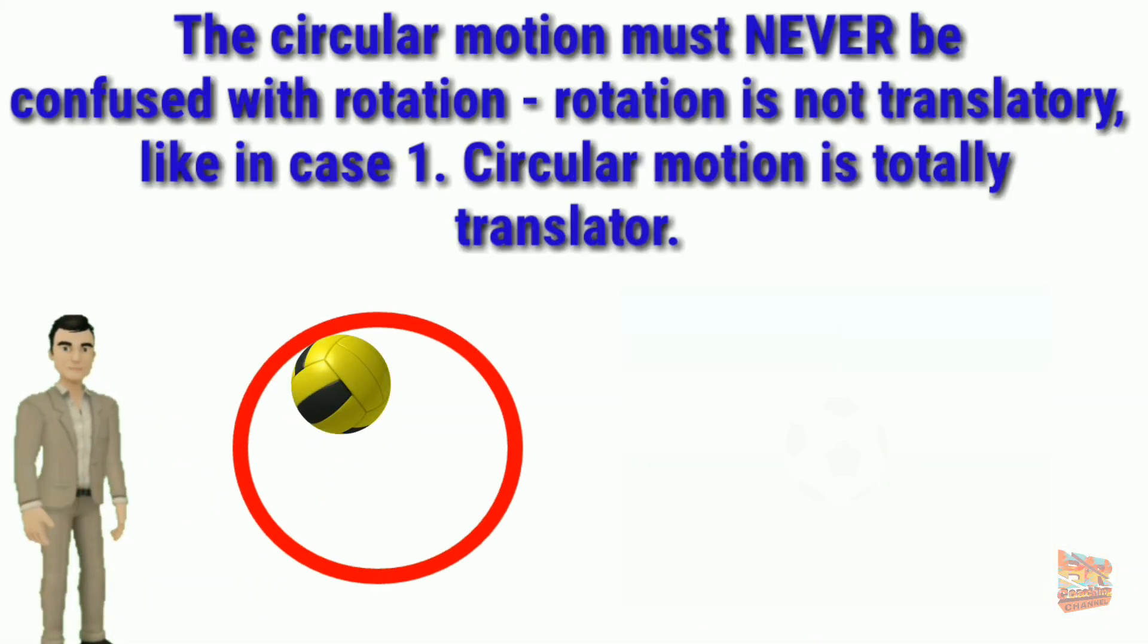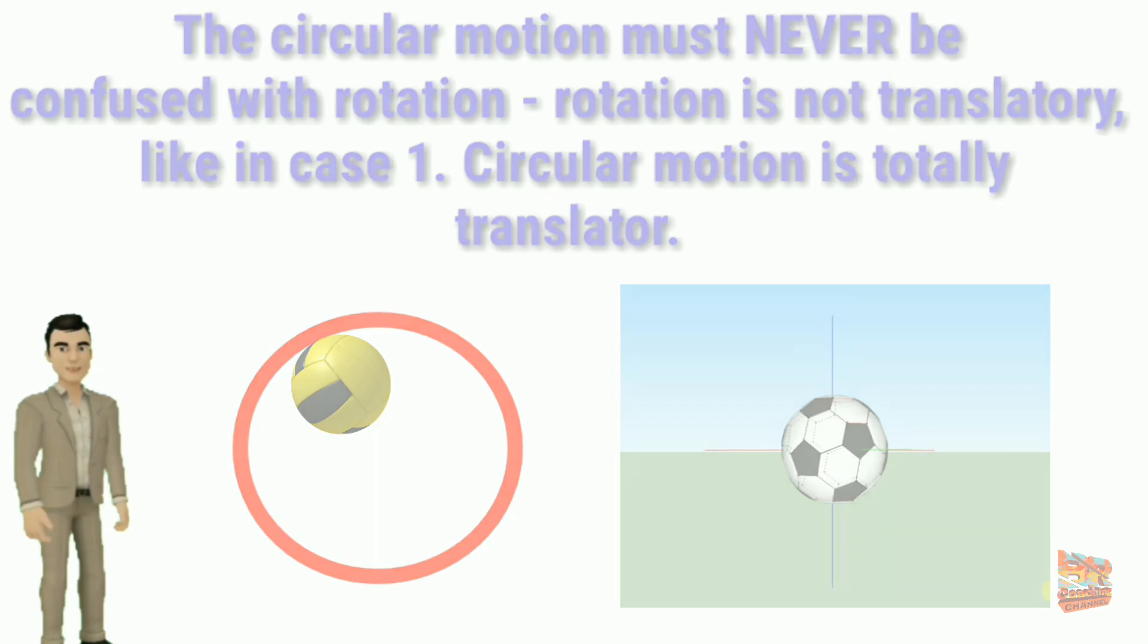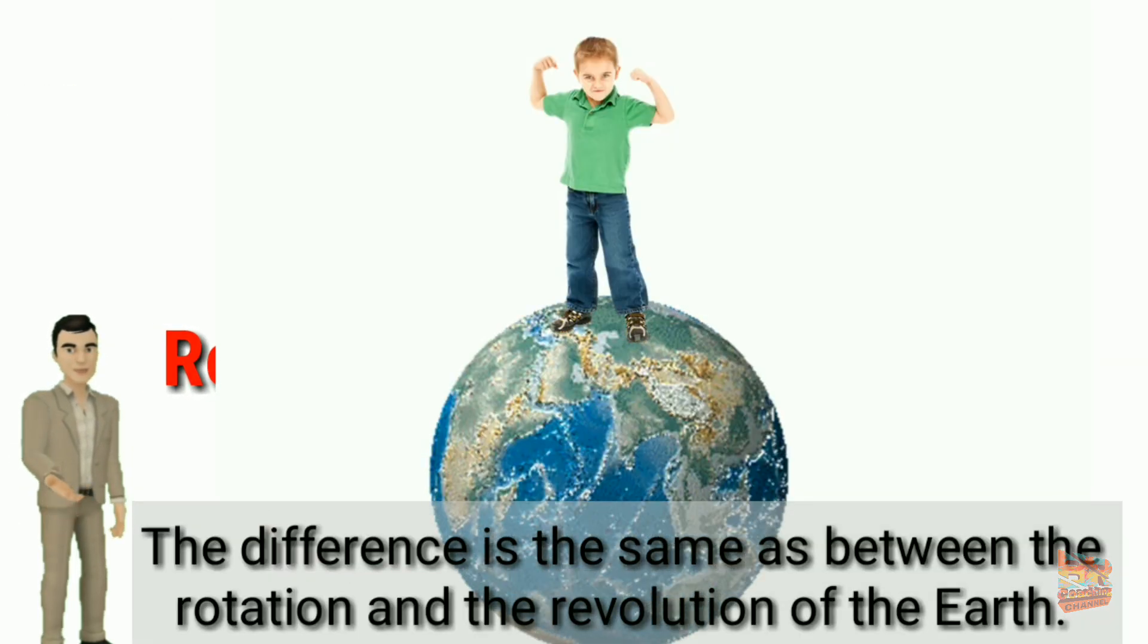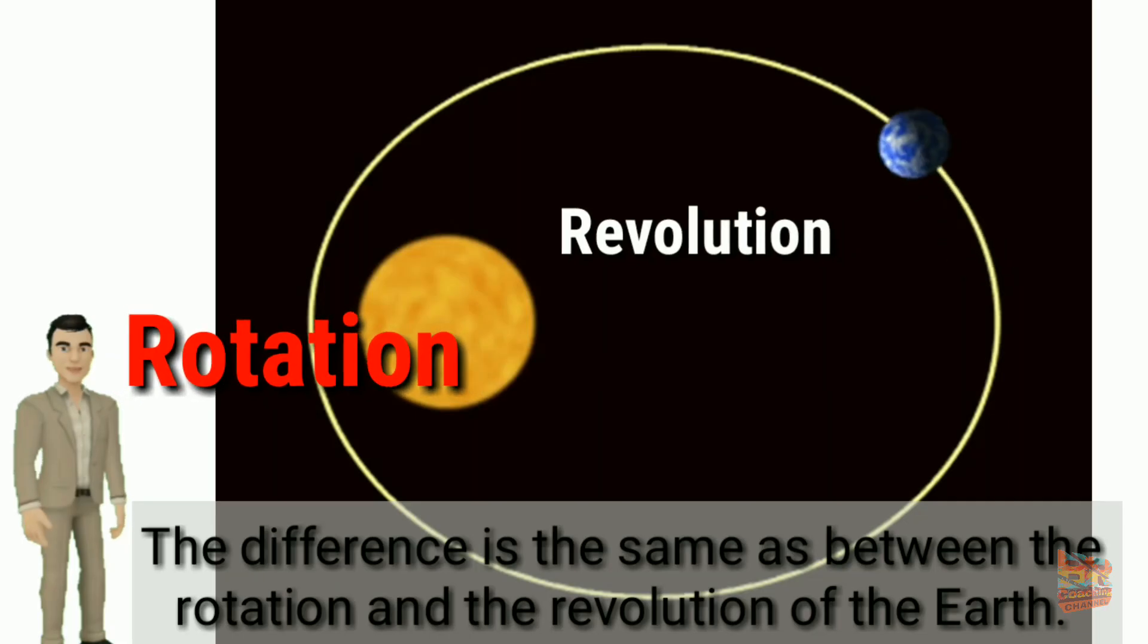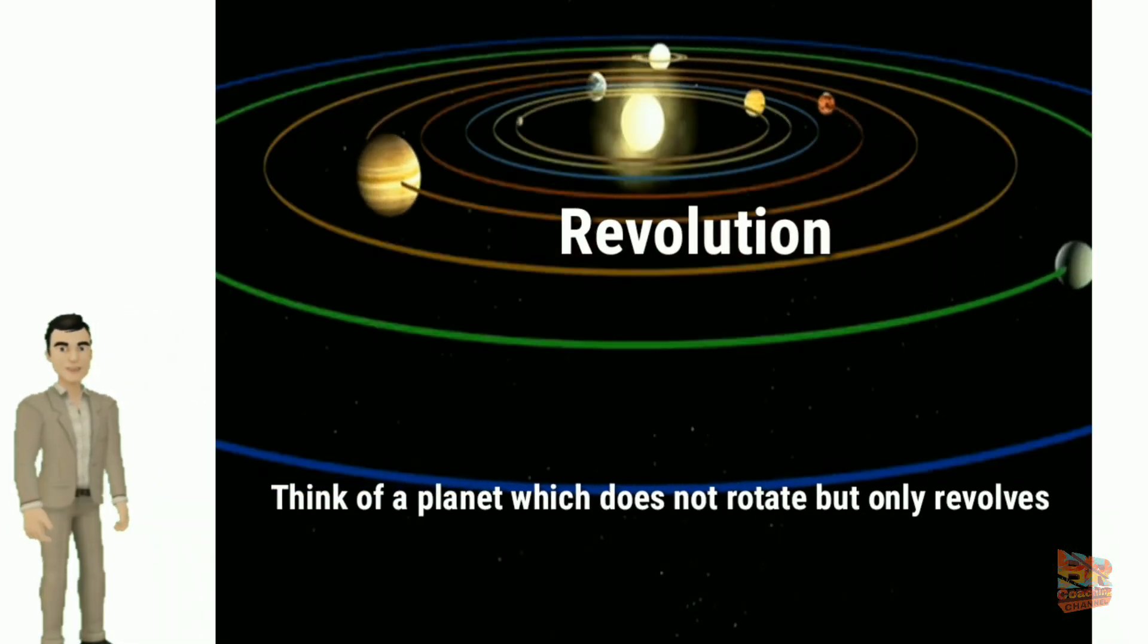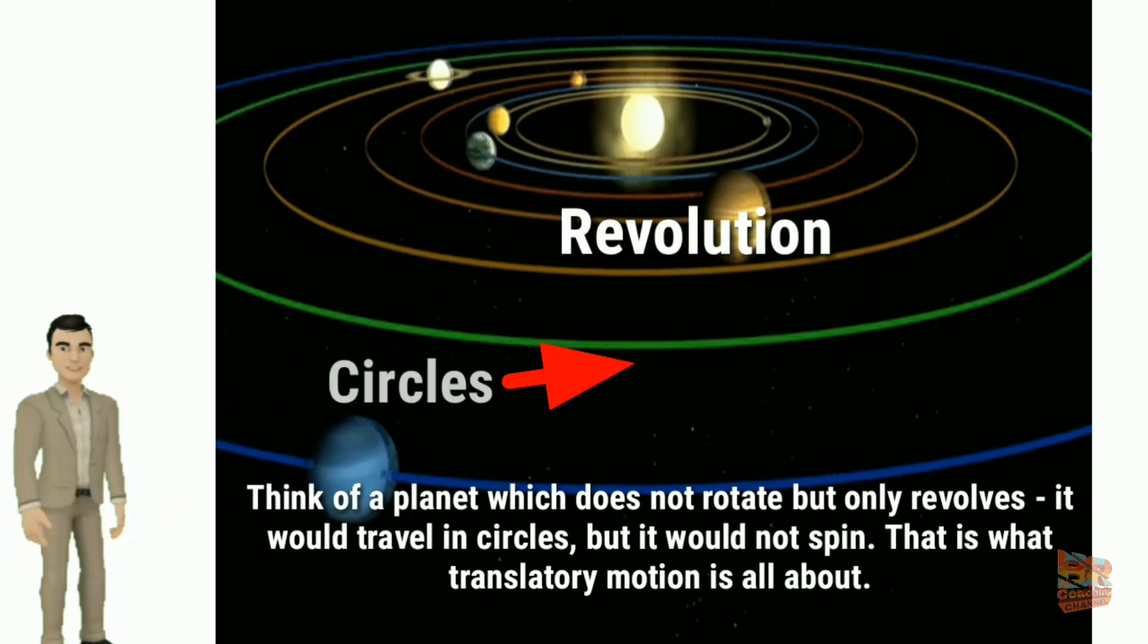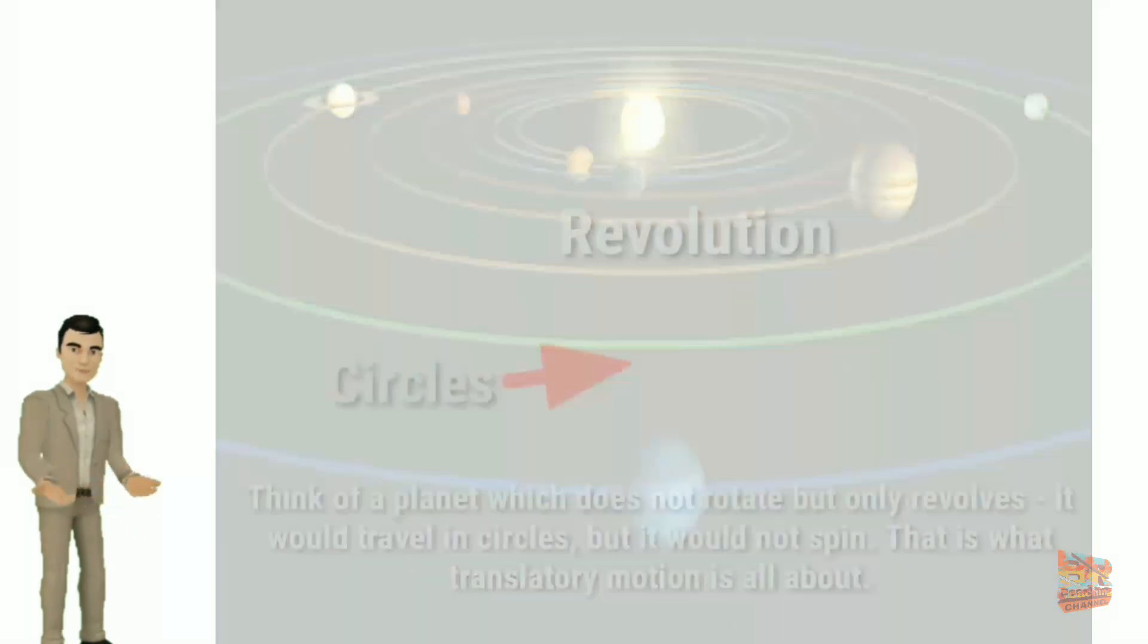The circular motion must never be confused with rotation. Rotation is not translational, like in case 1. Circular motion is totally translational. The difference is the same as between the rotation and the revolution of the Earth. Think of a planet which does not rotate but only revolves. It would travel in circles but it would not spin. That is what translational motion is all about.